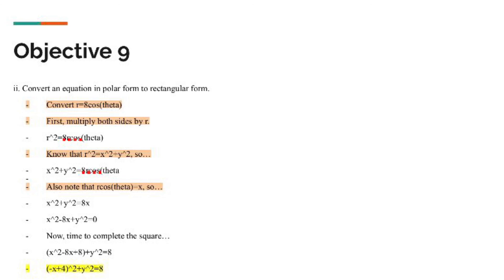I also wanted to note that r cosine of theta equals x, so I can replace the right side with x squared plus y squared equals 8x. Now we have all the correct terminology. x squared minus 8x plus y squared equals zero, because I subtracted 8x over. Seeing that all that is set to zero, I can complete the square. So x squared minus 8x plus 8 plus y squared equals 8 will get you the answer of negative x plus 4 squared plus y squared equals 8.